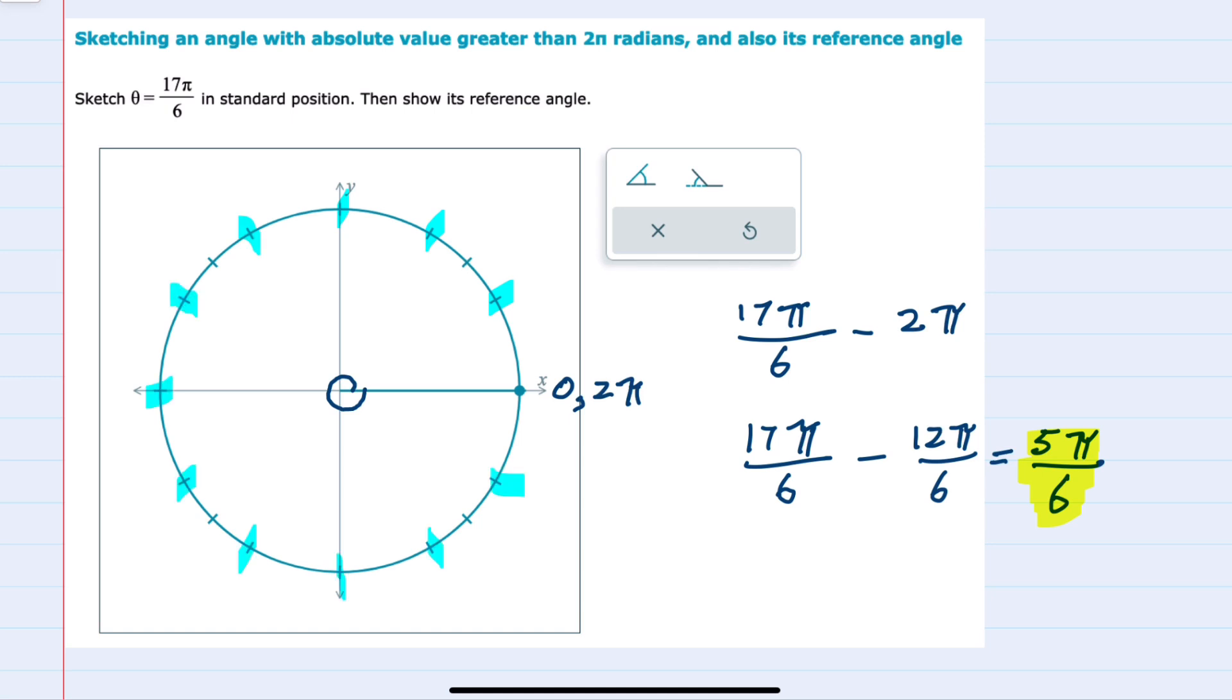So if I start at my positive x-axis this would be π/6. The next is 2π/6 which could be reduced to π/3. Next we would have 3π/6 which is π/2. 4π/6 which is 2π/3. And then 5π/6, that's the angle that we were looking for.